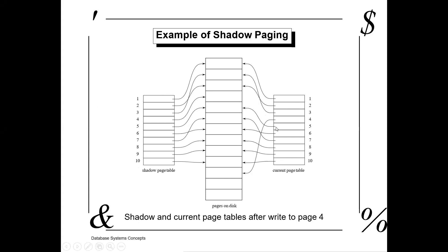Whatever values are there in the current page table, they are retrieved from the disk — the disk is nothing but the database storage that we have. We are retrieving this information from the disk into the current page table and performing operations on it. Before performing operations, we make the current page table identical with the shadow page table. The whole information before the starting of the transaction is saved into the shadow page table.